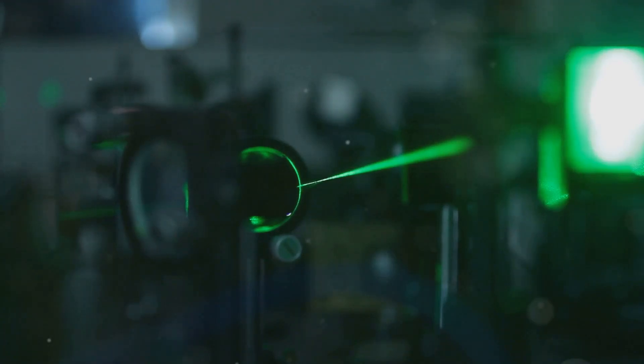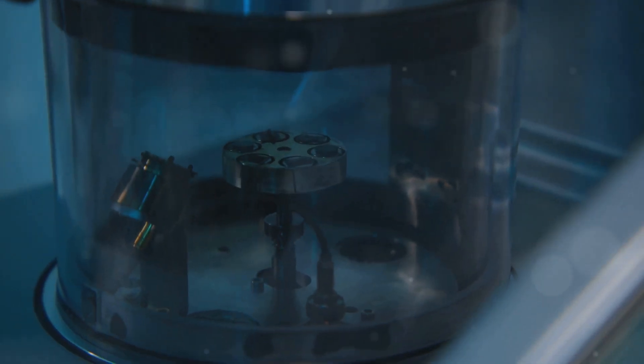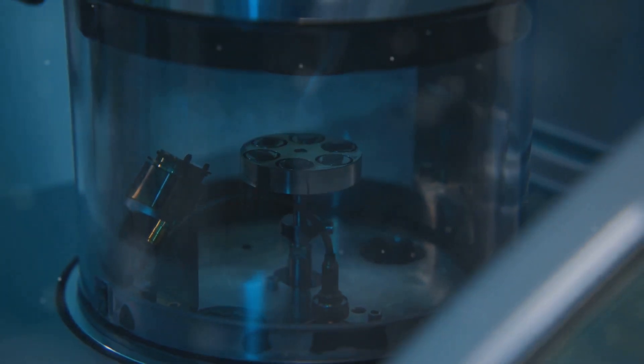When a gravitational wave passes through Earth, it creates a ripple effect that LIGO is designed to detect. It stretches one arm of the interferometer while compressing the other. This stretching and compressing is incredibly subtle.